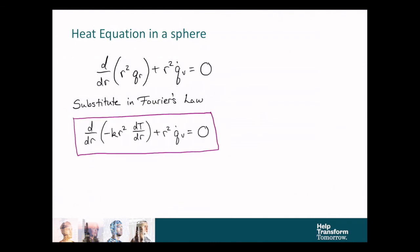And so, again, the heat flux is negative k dtdr, so we plug that into our heat equation and arrive at probably the most useful form for the heat equation in a sphere.